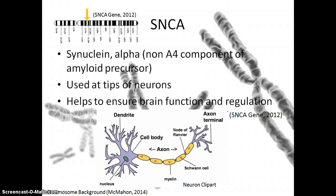The first gene sequence in focus is SNCA, also known as synuclein alpha, a non-A4 component of amyloid precursor. SNCA can be located on the long end of chromosome 4, is used at the tips of neurons when it is made after transcription and translation, and helps to ensure brain function and regulation. Here you can see a neuron, and at the end of the terminals is where SNCA would be found, allowing two neurons to communicate with one another successfully.